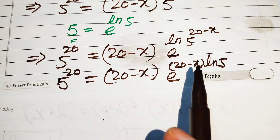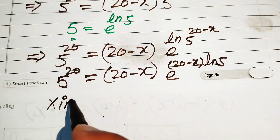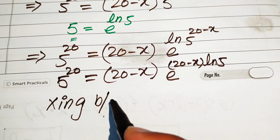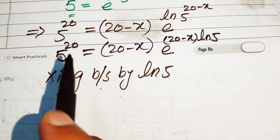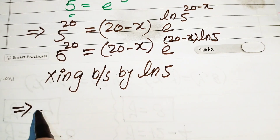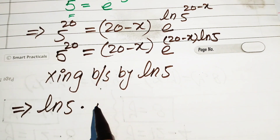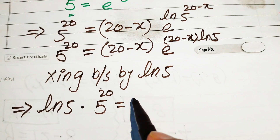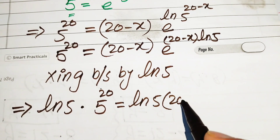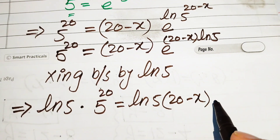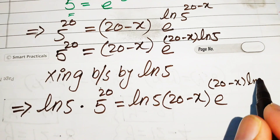We need the full factor 20 minus x times log 5 in the exponent, but currently we only have 20 minus x, so we multiply both sides by log 5. When we multiply both sides by log 5, the left hand side becomes log of 5 into 5 to the power of 20, and the right hand side becomes 20 minus x times log 5 times e to the power of 20 minus x times log 5.